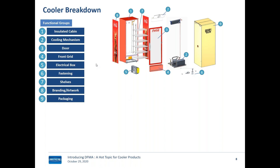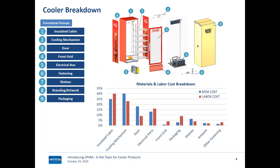How do these functional groups relate to cost? More than 50% of cost — in terms of both material and labor — is hidden inside the cabin and the cooling mechanism. These functional groups represent the biggest opportunity for cost savings. We tried to make this opportunity visible to our people and show them easy ways to address it, which is exactly where DFMA entered the game.